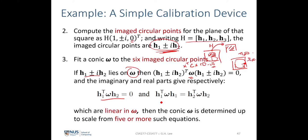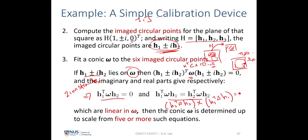The first equation is H1^T · ω · H2 = 0. The second equation is H1^T · ω · H1 = H2^T · ω · H2, which we can also write as H2^T · ω · H2 − H1^T · ω · H1 = 0. Both equations are linear with respect to omega. One pair of circular points — two circular points — gives us two constraints.